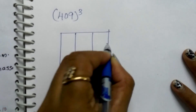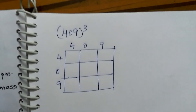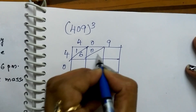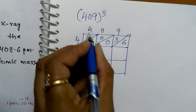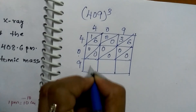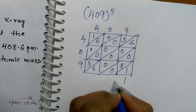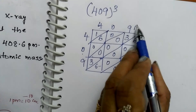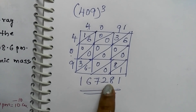Draw the box like this. Do 409 × 409 — first square it. Using the box multiplication method: 4×4=16, 4×0=0, 4×9=36; 0×4=0, 0×0=0, 0×9=0; 9×4=36, 9×0=0, 9×9=81. Now add diagonally: you get 1, 8, 0, 0, 8, then 6+6=12 (carry 1), 3+3+3+1=7, giving 167,281. So 409 squared equals 167,281. You can check it — 160 students can do this so fast using this trick.